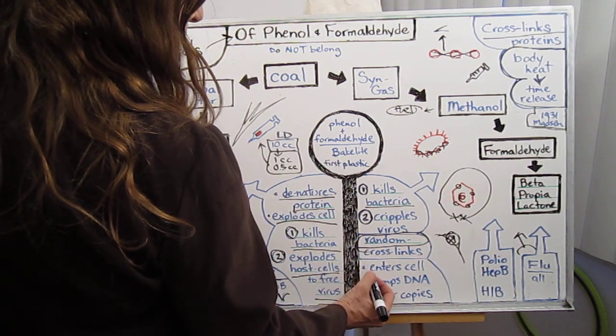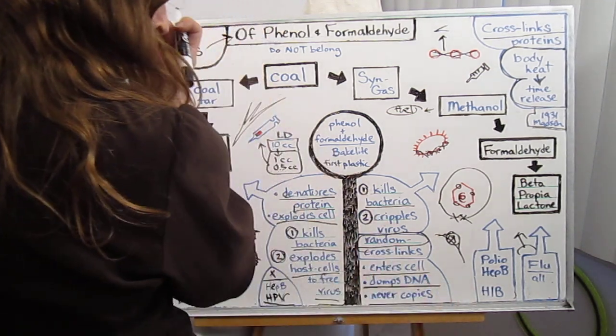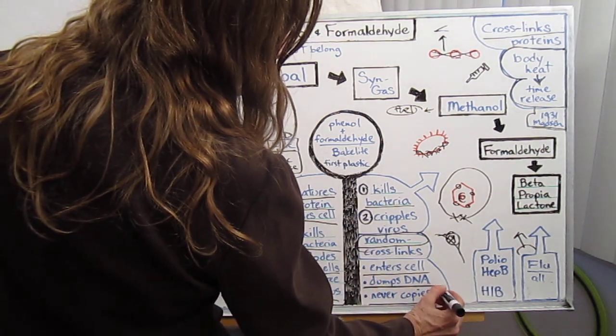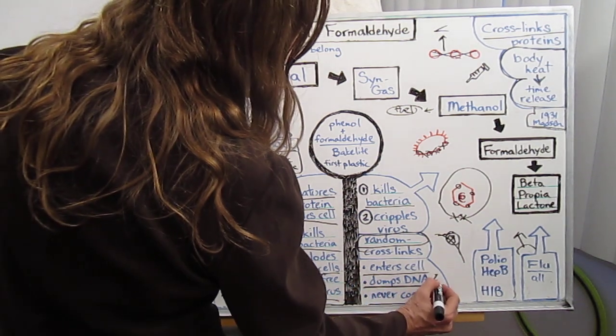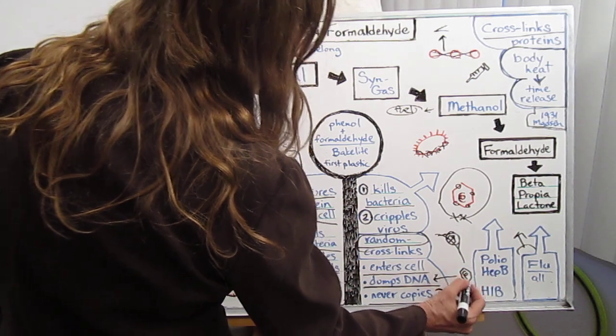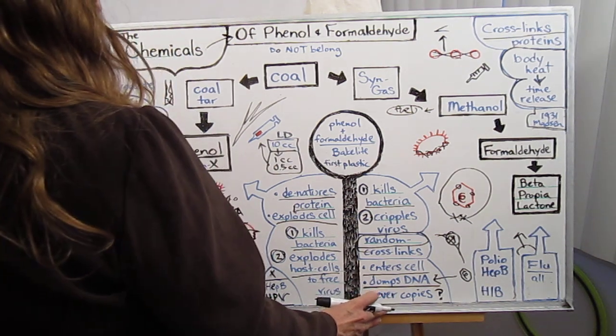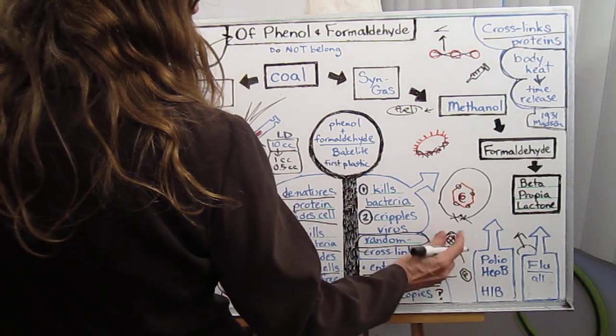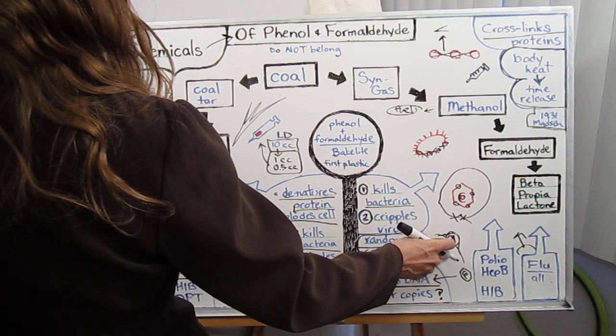And as a matter of fact, it can enter the cell. It can dump its DNA. It does not make copies of itself. I'm going to put never copies with a question mark, because these are the movers of evolution. But I must say, for some viruses, dumping its DNA into a cell is all it needed to do. Anyways, it has achieved its goal, even if it cannot reproduce for some cells.